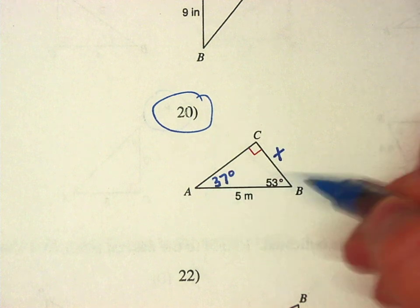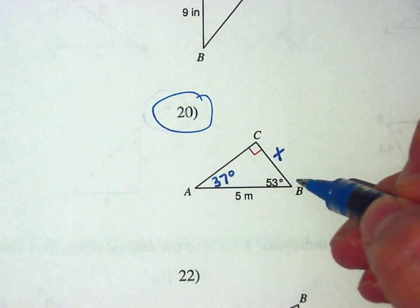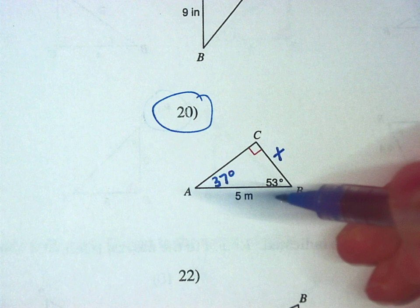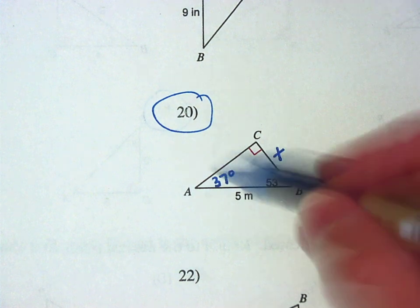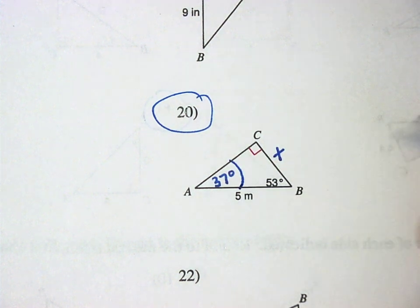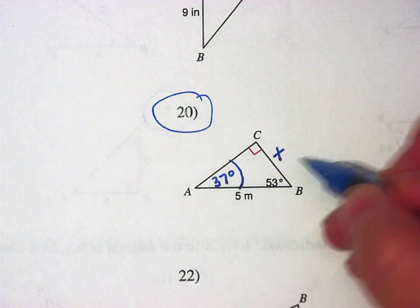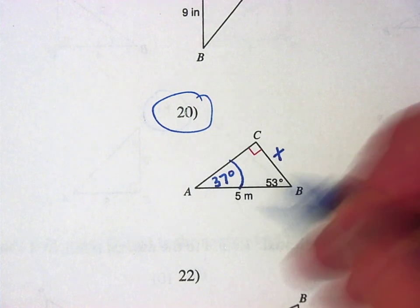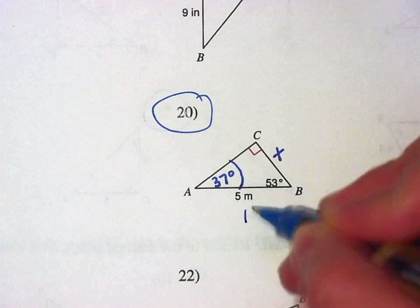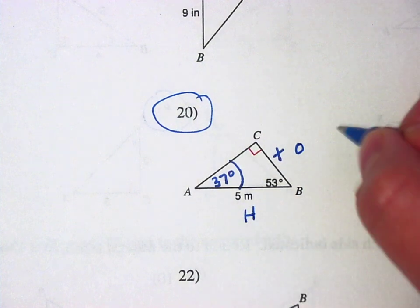So which side do you want to use? Somebody pick. Somebody be brave. Pick, pick, pick. 37. I guess 37 is what we're saying. My goodness, you guys. So 37, we've got 5 and X. So what are those relationship there? Hypotenuse and an opposite. So I guess we're using what? Sine. So.